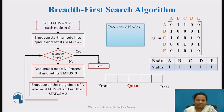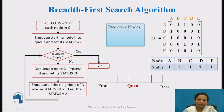Now we will see the BFS algorithm with an example. We are continuing with graph G with nodes A, B, C, D, and E. The adjacency matrix representation is shown here. We start with node A. All nodes' status is set to 1 as the first step. Then we enqueue the first node A into the queue and set its status to 2, indicating it is waiting.